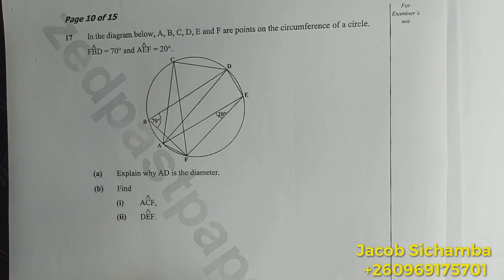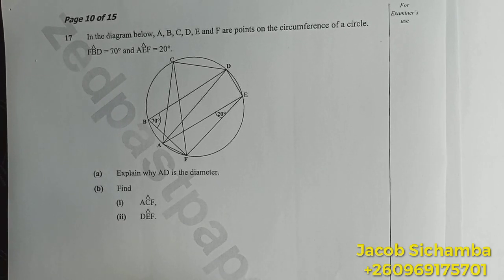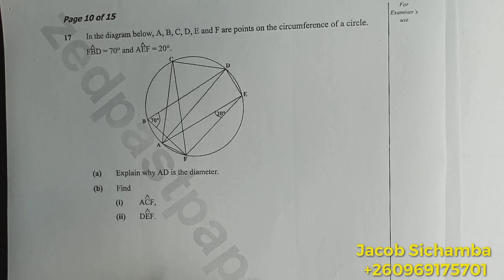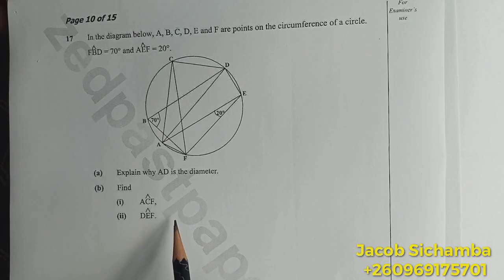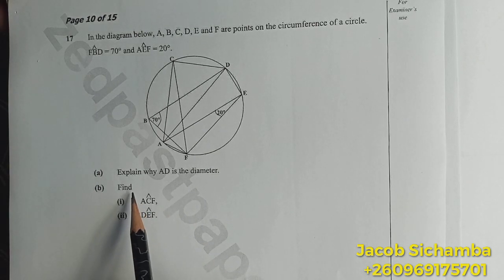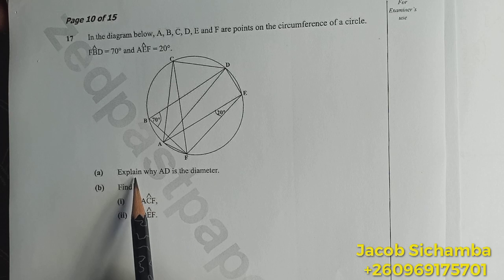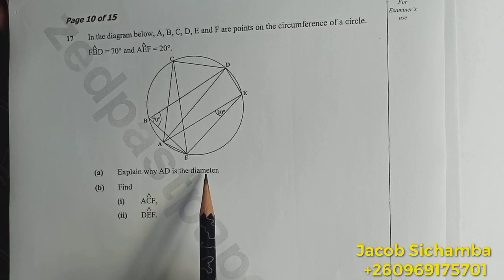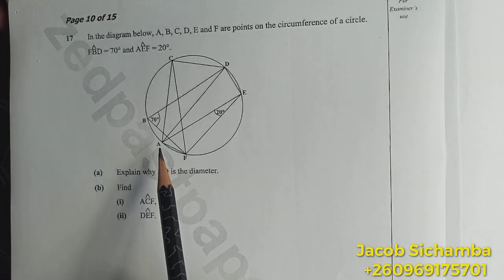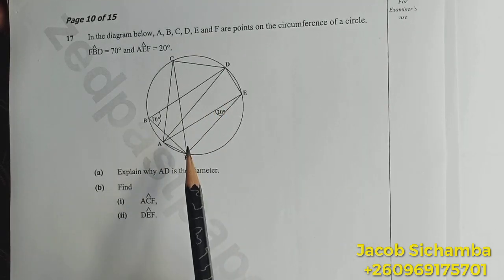Okay, so this is one of the questions that I gave you. It's all about circle theorems. For question A, they're saying explain why AD is the diameter.